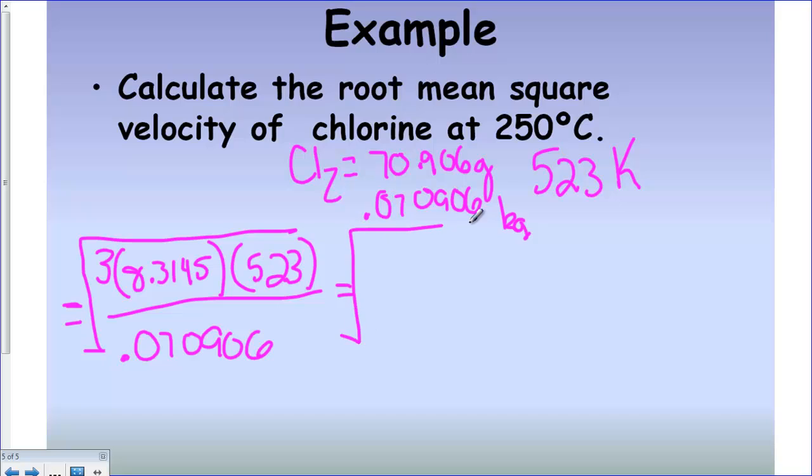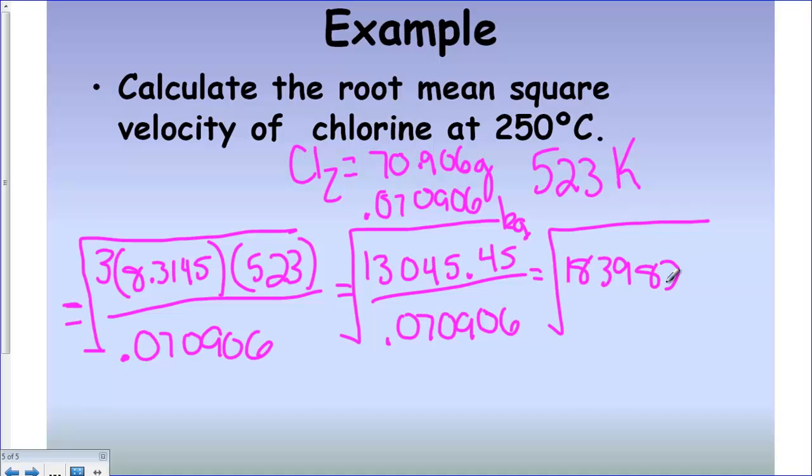Solve for the top, and then solve for the bottom. So the top, I got 13,045.45, and that's going to get divided by the molar mass down here, and then we got to square root it, and I got 183,982.32. You work that out, and that is 429 meters per second, which technically sig figs, because there's only two here, would sig fig to 430 meters per second.